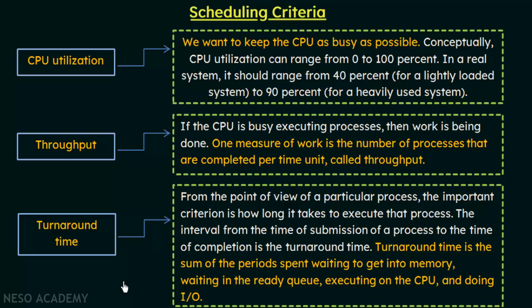When a process is submitted for execution, it does not just get the CPU and complete its execution in one go — it goes through different states. Turnaround time includes all those states: the time waiting in the ready queue, the time executing on the CPU, and time waiting for I/O. The total time from submission to completion is the turnaround time, seen from the perspective of a particular process.